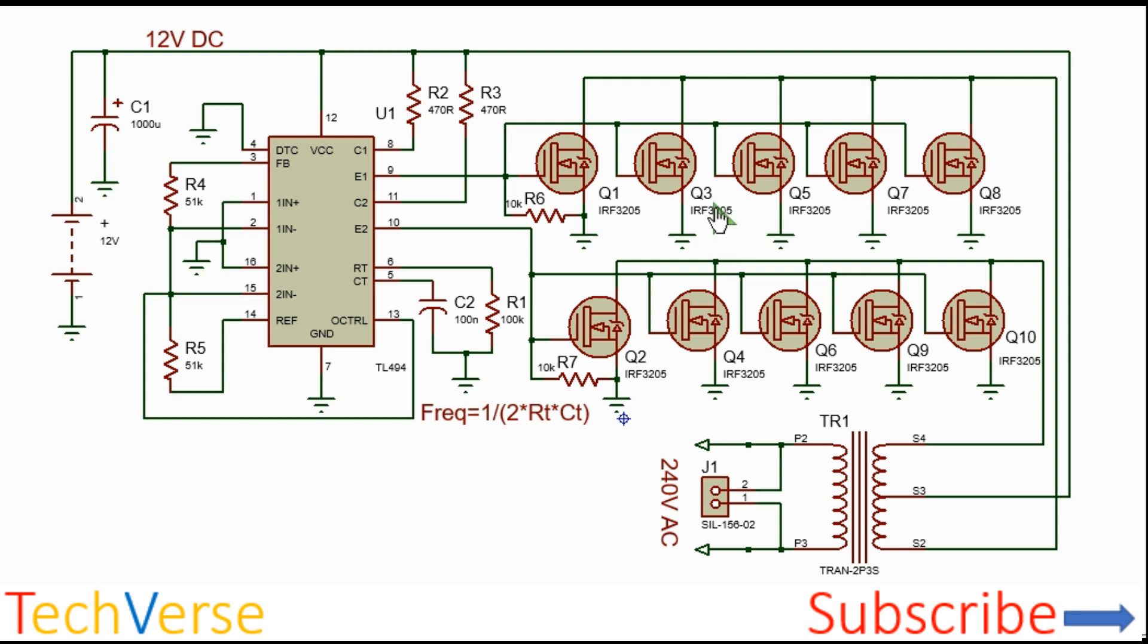Just ensure that the transistors you select can easily handle the required current and the transformer can handle the required output power capacity. You can easily rewind your transformer to get custom output voltages such as 240 volts, 230 volts, 120 volts, or even 110 and 120 volts.